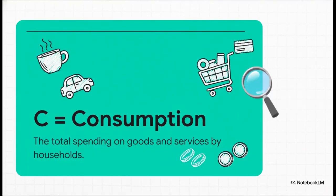First up is C for consumption, and this is the big one — it's the biggest piece of the puzzle. This is all the spending by households, like you and me. Your morning coffee, your phone bill, the groceries you buy — it all adds up. And it's what really drives the economy day to day.